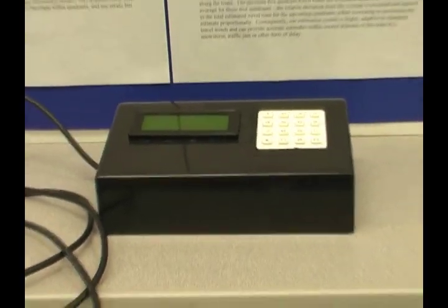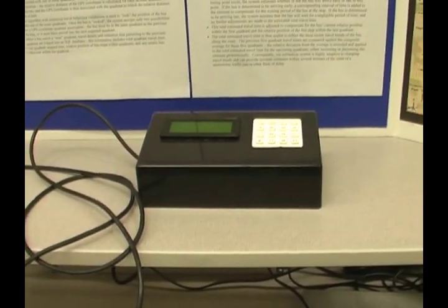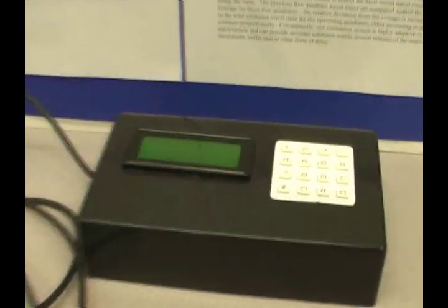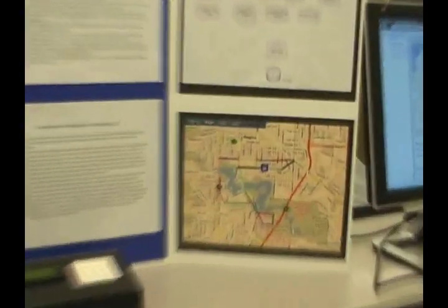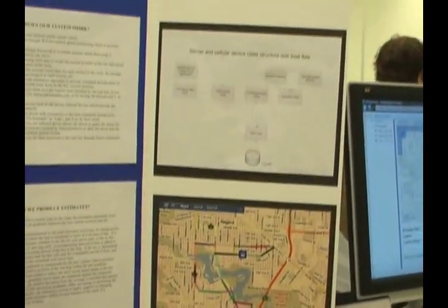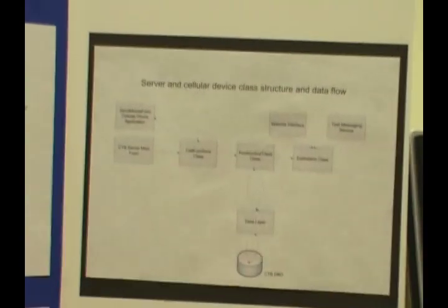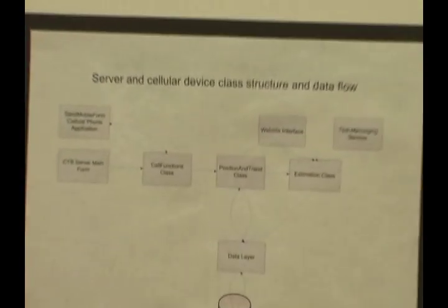To accomplish this, we created a device that we installed on the bus. The device acquires GPS data and sends it to a remote server. The server then processes this data and creates trend data for each quadrant of the road — essentially the road is divided into quadrants. With this trend data, it can then, through an estimation algorithm, determine the estimated arrival time to specific stops from the bus's current location on the road.